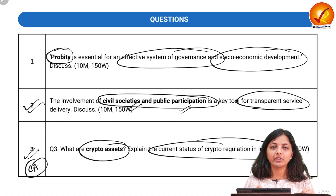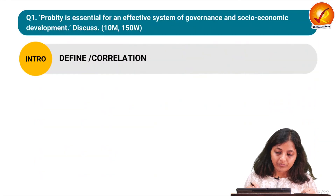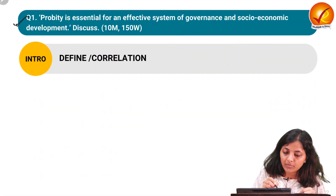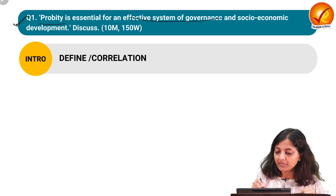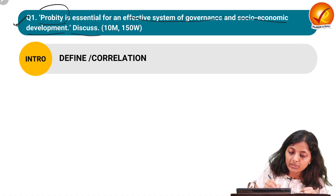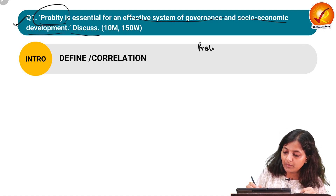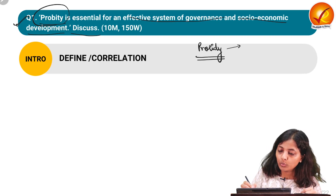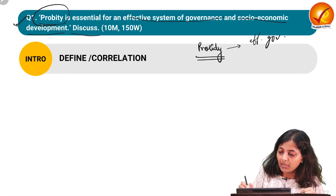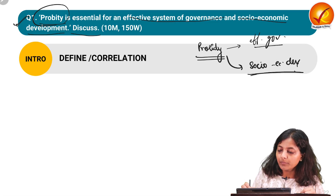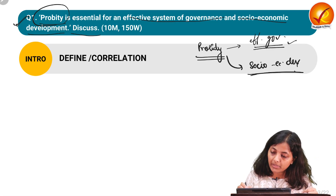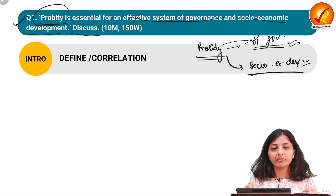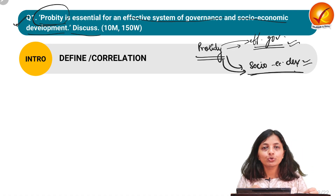The third question is related to current affairs - it is about crypto assets and the current status of crypto regulation in India. Starting with the first question: propriety is essential for an effective system of governance and socio-economic development. Our answer will have two main body parts - propriety in effective governance, and propriety in socio-economic development.